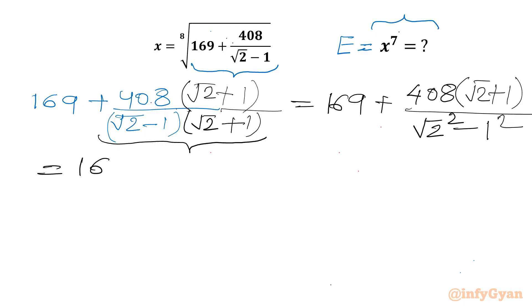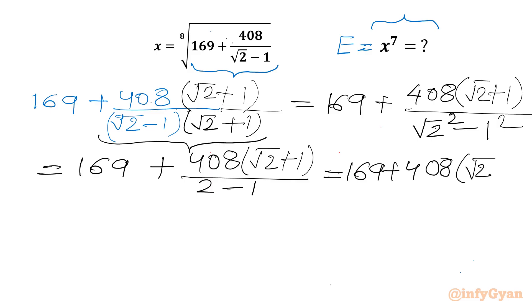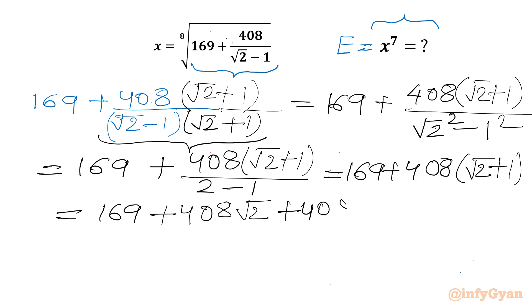This will be equal to 169 plus 408 times (root 2 plus 1) over root 2 squared is 2, 1 squared is 1, so the denominator will be 1. I can write 169 plus 408 times (root 2 plus 1), which gives us 169 plus 408 root 2 plus 408, equaling 577 plus 408 root 2.